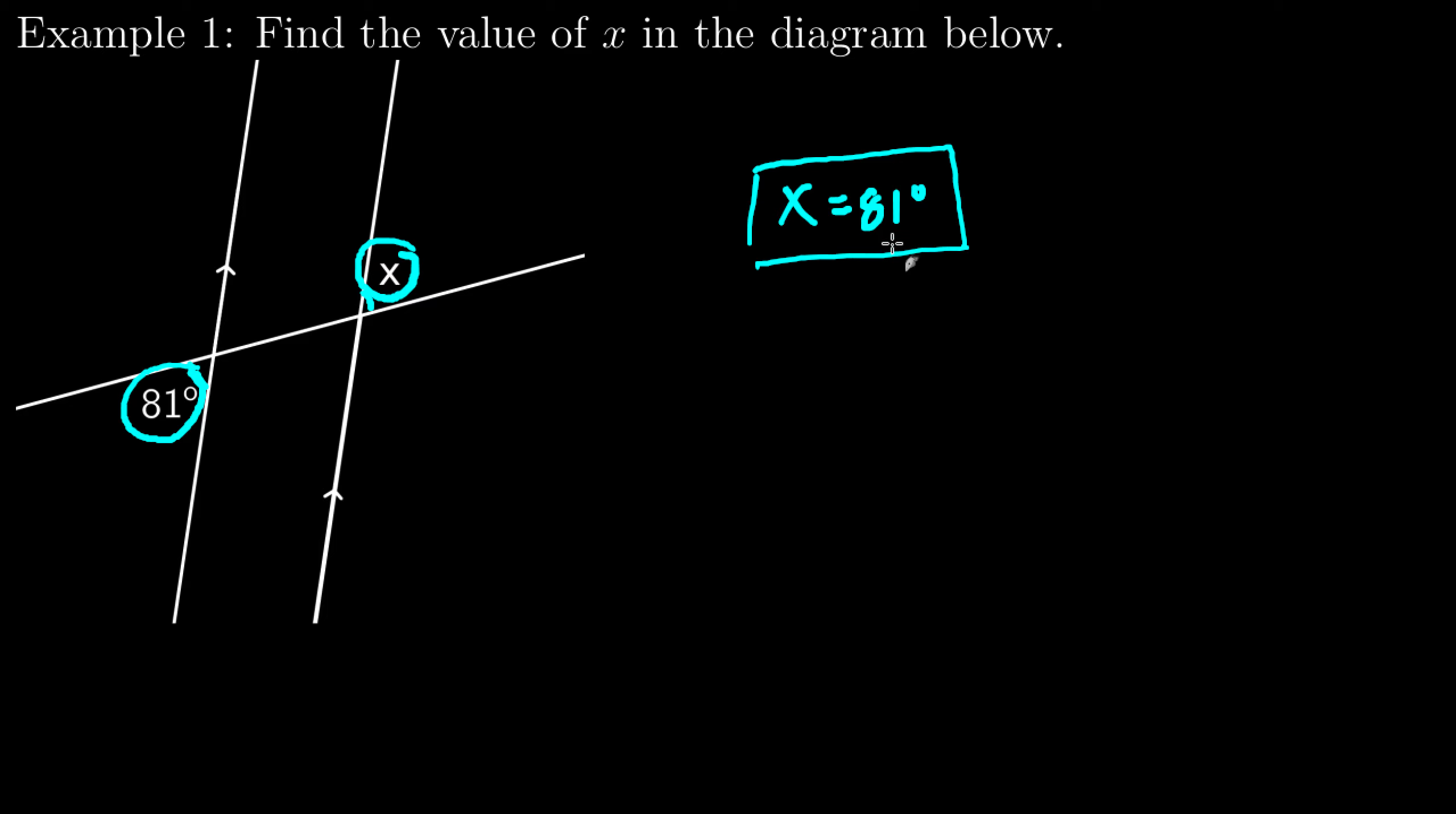If I want to name them, I see that they are on different sides of the transversal, so that is the word alternate. I see that they are outside of the two parallel lines, so that is the word exterior. So these are alternate exterior angles.